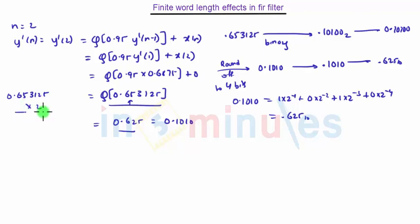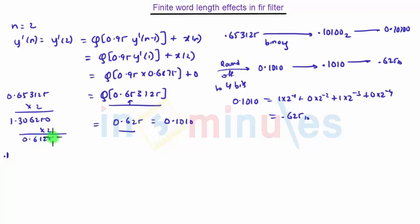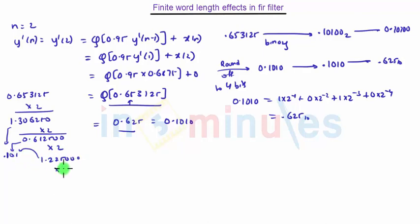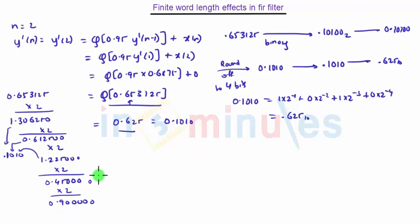First we multiply by 2, giving 1.306250 — this 1 is the first bit. Then multiply by 2 again, giving 0.612500 — this 0 is the second bit. Again multiply by 2, giving 0.450 — so again 0. And again multiply by 2, giving 0.9000 — so again 0.